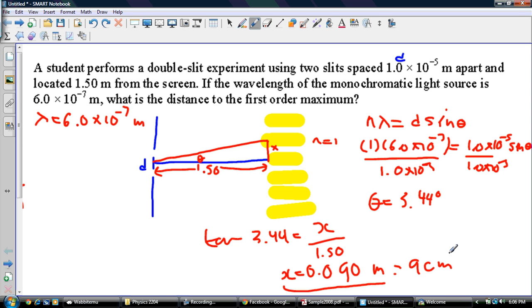So that's the distance to my first order maxima. If I had to do second order maxima, only difference here, n would be 2. And then you'd have a slightly bigger angle. All right, guys. I hope this helped. Good luck studying.